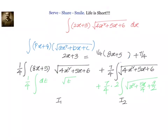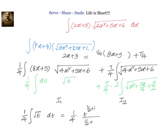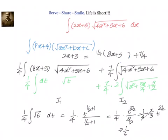First let us work on I1. I1 = (1/4) ∫ root(t) dt = (1/4) ∫ t^(1/2) dt = (1/4) × [t^(3/2) / (3/2)] = (1/4) × (2/3) × t^(3/2). Simplifying, we get (1/6) t^(3/2), that is (1/6)(4x² + 5x + 6)^(3/2). That is our I1.